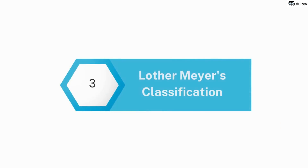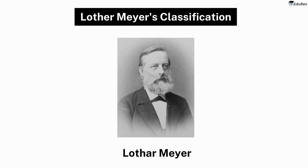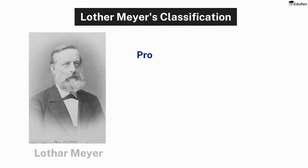Following the unsuccessful attempt of John Newland's law of octaves, Lothar Meyer's classification provided a new system for classifying elements. Lothar Meyer was a German chemist who, in 1864, proposed a classification of the elements based on their atomic volumes. This was a significant development in the field of chemistry and helped lay the foundation for the modern periodic table.